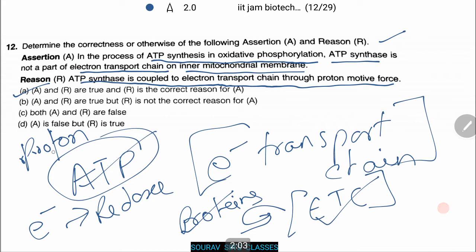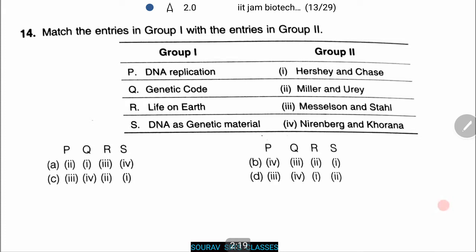Thus A and R are both true and R is the correct reason for A. Now let's do another one — match the entries of Group 1 and Group 2. In Group 1 we are given certain phenomena and in Group 2 we are given the names of scientists who introduced or discovered them.